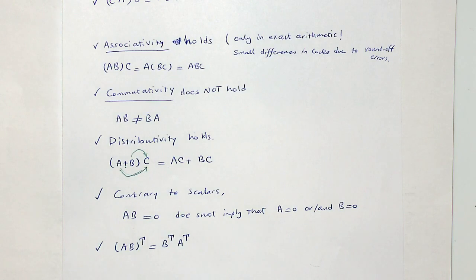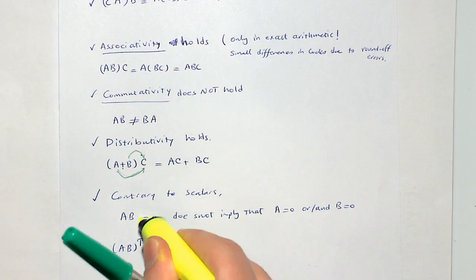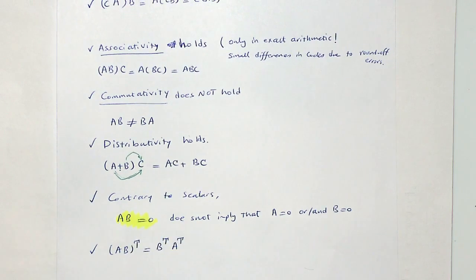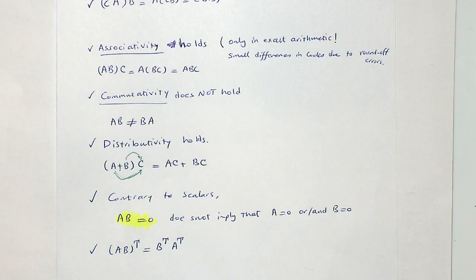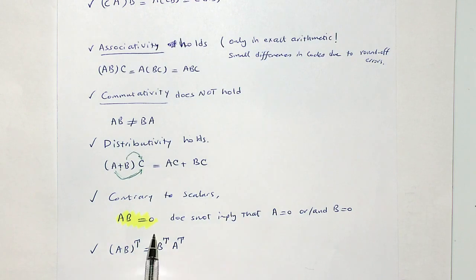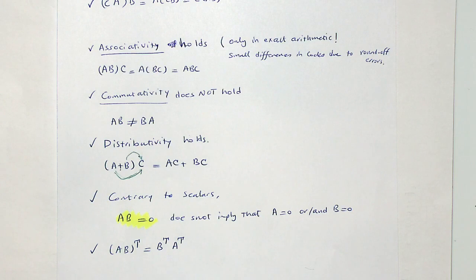Distributivity holds: (A + B)·C = A·C + B·C. However, if A·B = 0, it does NOT imply that A or B is zero. This is exactly opposite to scalar arithmetic — with matrices, the product can be zero even if neither factor is zero.